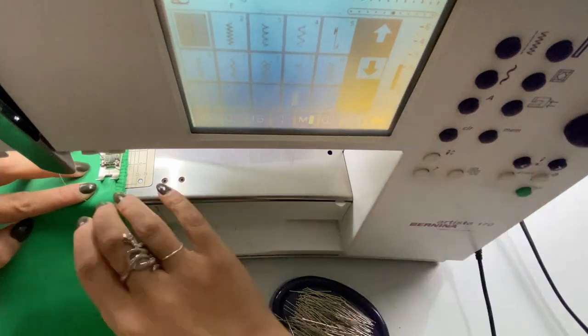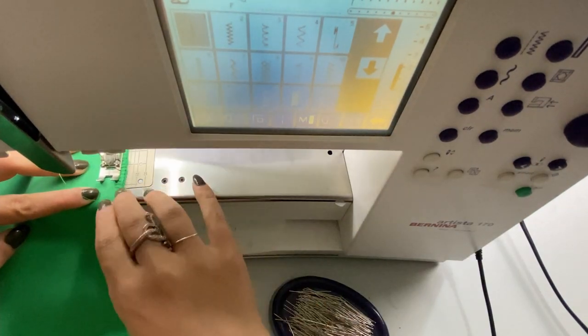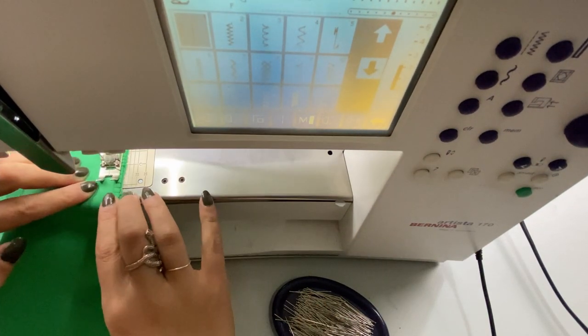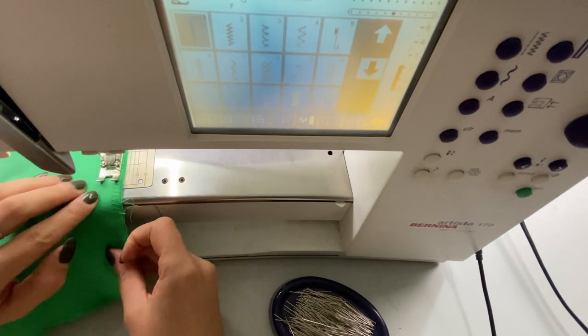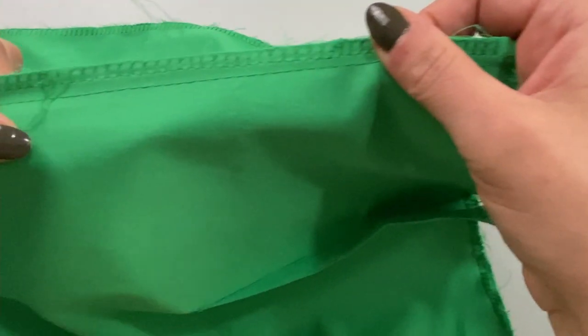When I arrive at said mark, I change the stitch length to 2.5 and then go a few stitches backward and forward to secure the seam. Then I sew till the end of the seam. You can really see the difference of the stitch length.